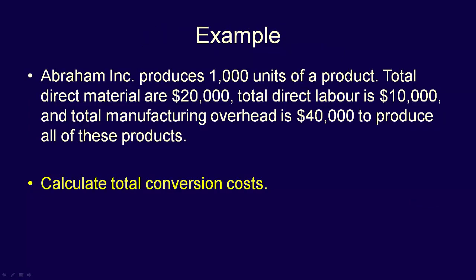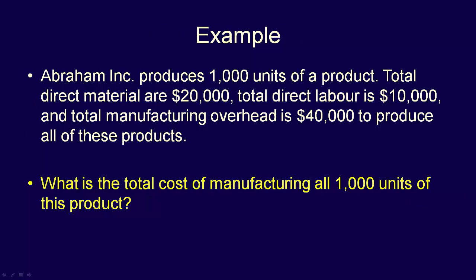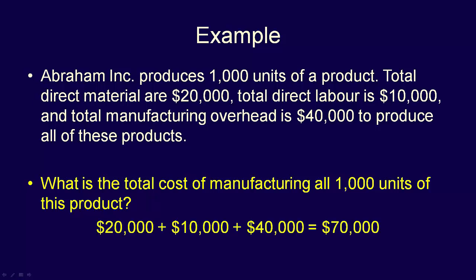Now let's calculate total conversion costs. Conversion costs are made up of the costs incurred to convert the raw materials into a finished good. Conversion costs equal $10,000 of direct labour plus $40,000 of manufacturing overhead for a total conversion cost of $50,000. The total cost of manufacturing all 1,000 units is the direct material plus the direct labour plus the manufacturing overhead, which is $20,000 plus $10,000 plus $40,000 for a total of $70,000.